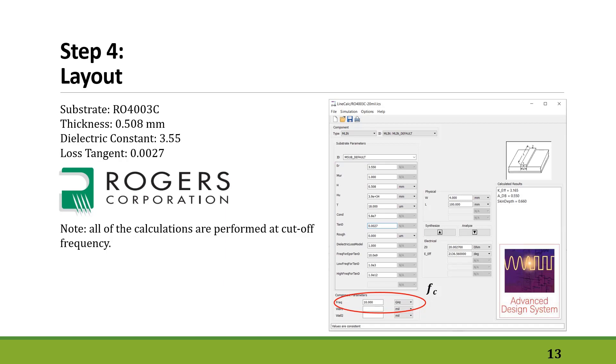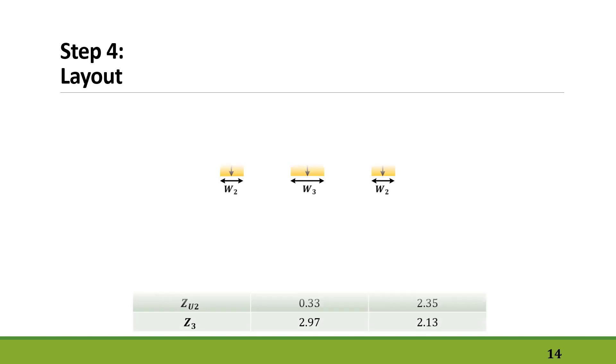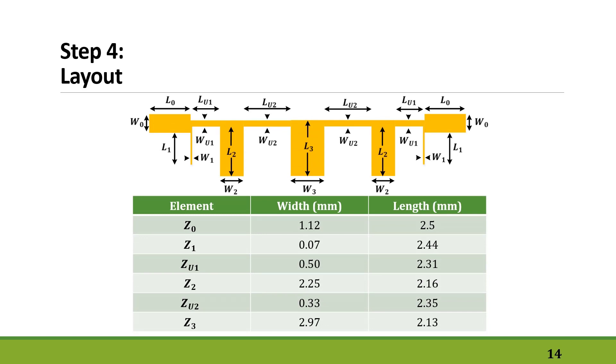Here we use Line Calculator of ADS software to transform impedances and electrical lengths of every section of the filter into physical widths and lengths. Remember to always do this transformation at cutoff frequency. So this is the layout of our fifth order Chebyshev low-pass filter using open-circuited stubs.